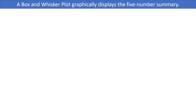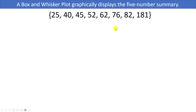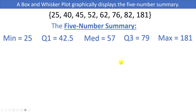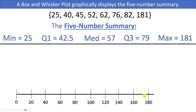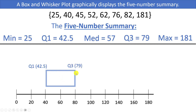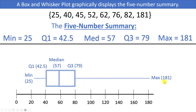Frequently you might graphically display the five-number summary using what is called a box and whisker plot — or box plot. Using the car salesman data set and its five-number summary, you create a number line spanning all the numbers, then draw a box from Q1 to Q3 with a line inside representing the median. From there, whiskers extend to the maximum on the right and the minimum on the left. This graphically displays the five-number summary.